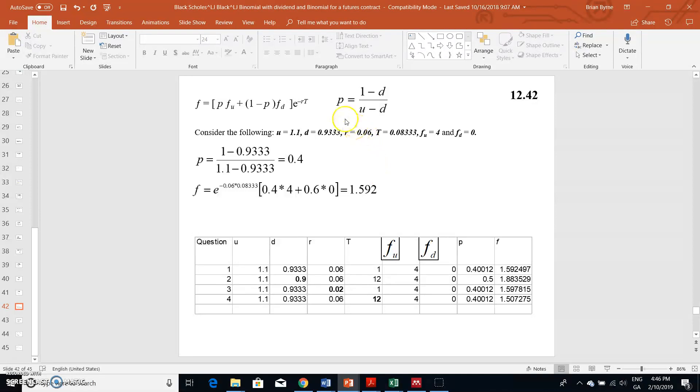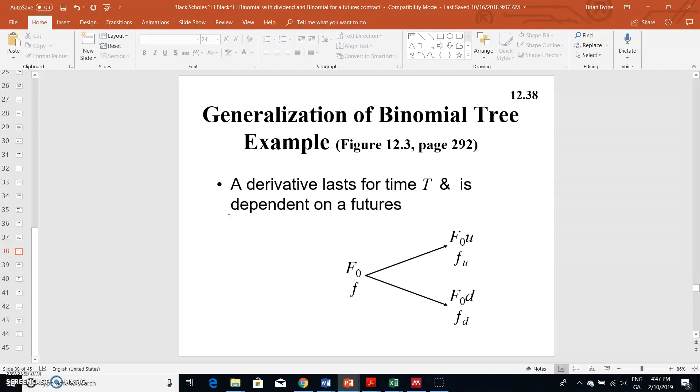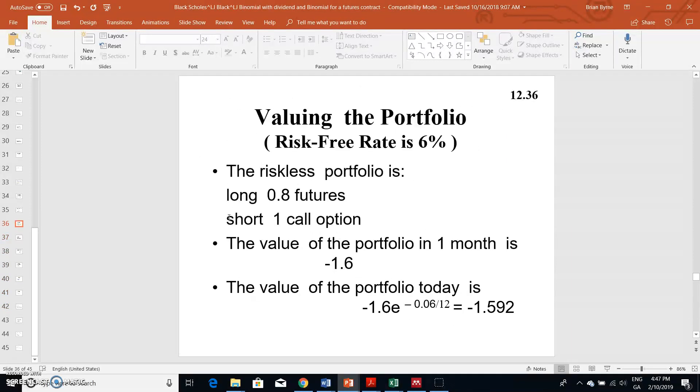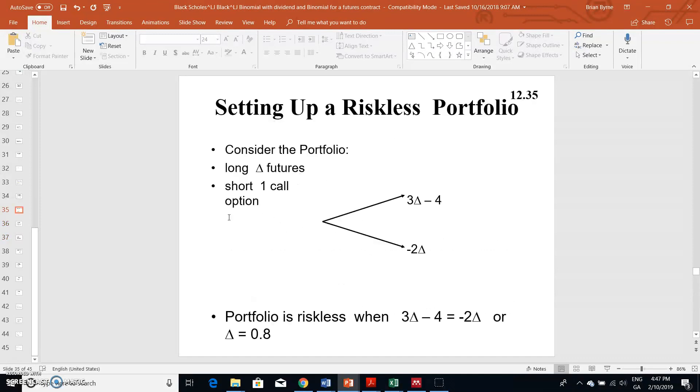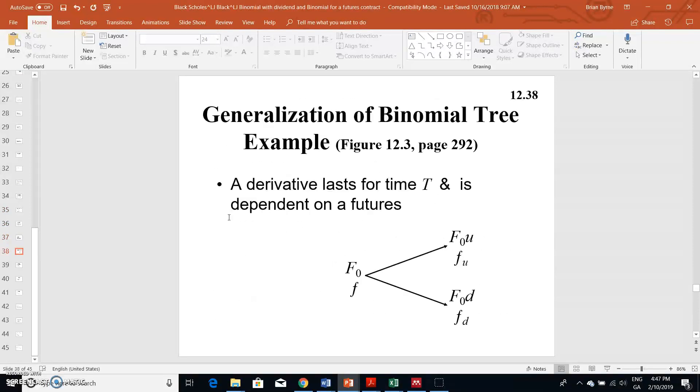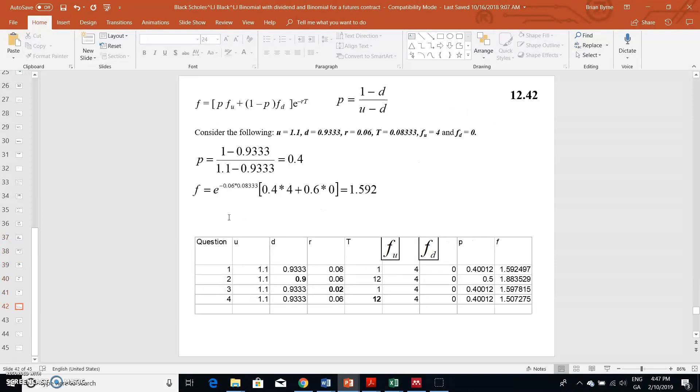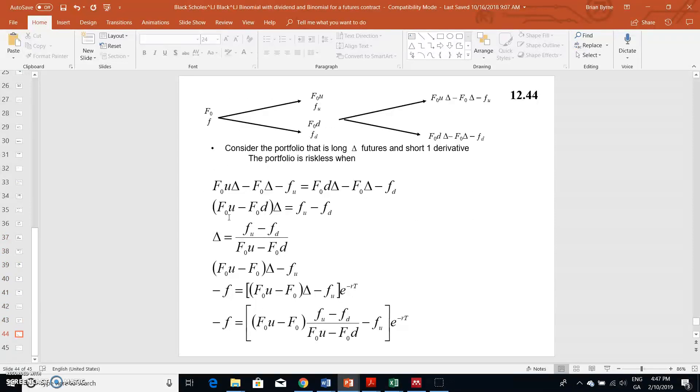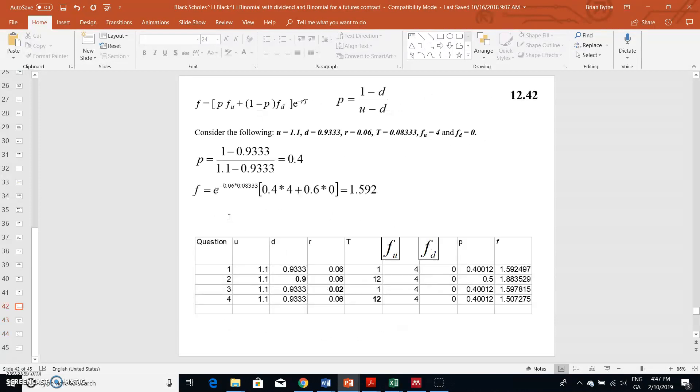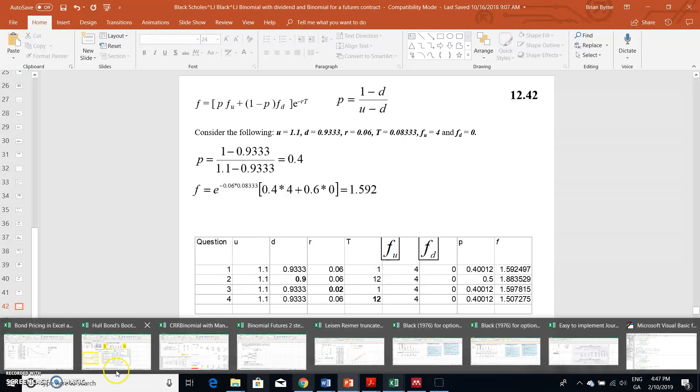A question then arises: how do we move from this one-step binomial tree using a risk-neutral approach and no-arbitrage approach to using a multi-step tree, perhaps starting with a two-step tree? So going from one step to two steps.